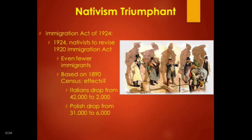Most in Congress wanted to continue the quota system but with a few changes. They sought even fewer total immigrants by lowering the percentage, and many also wanted to use an earlier census — ultimately arriving at the 1890 census rather than 1920, which was currently in use. Using 1890 was significant because that was just at the early cusp of the wave of new immigrants, so those nations that had seen millions of immigrants arrive during that era would see their numbers vastly decreased by using the earlier census.